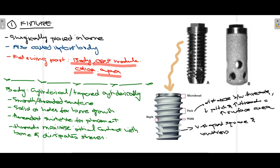Firstly, talking about the fixture: it is that part of the implant placed inside the bone, also known as the implant body. The fixture consists of three parts: the body, the crest module, and the apex. The body is cylindrical or tapered. It can be either smooth (non-threaded) or threaded. As you can see, this is a threaded fixture and this is a smooth one. The fixture can also be either solid or have holes, which provide space for bone growth.